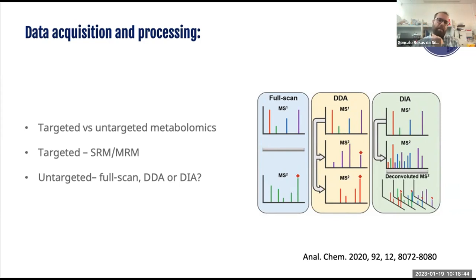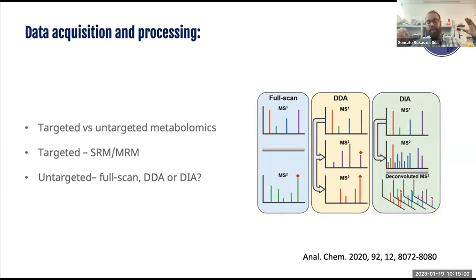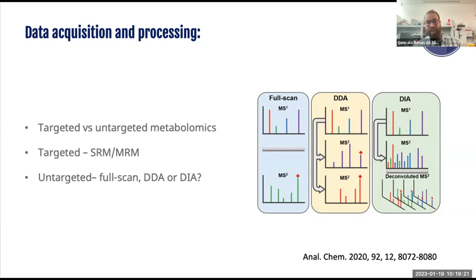DIA is basically where a lot of the technology is heading. It's an approach where the instrument, within a certain time window and mass range, tries to collect and fragment every single precursor ion, giving you a very thorough look at everything in your sample. It's the most powerful technique, but it also means the data can be incredibly complicated to extract useful information from. Justin will give you a nice rundown of the computational approaches available here.